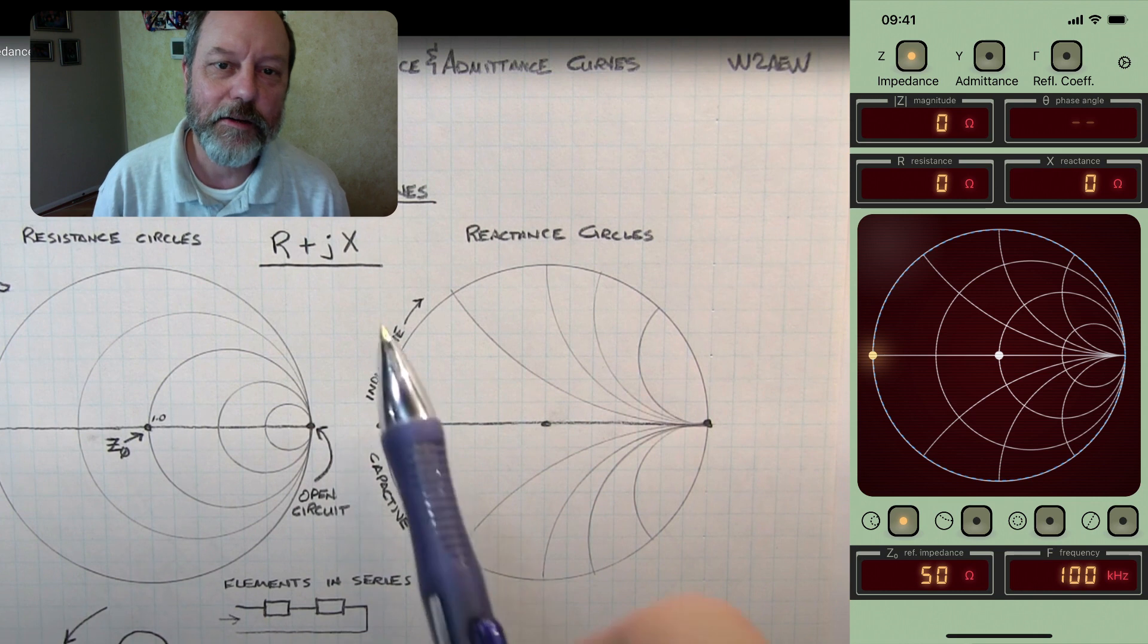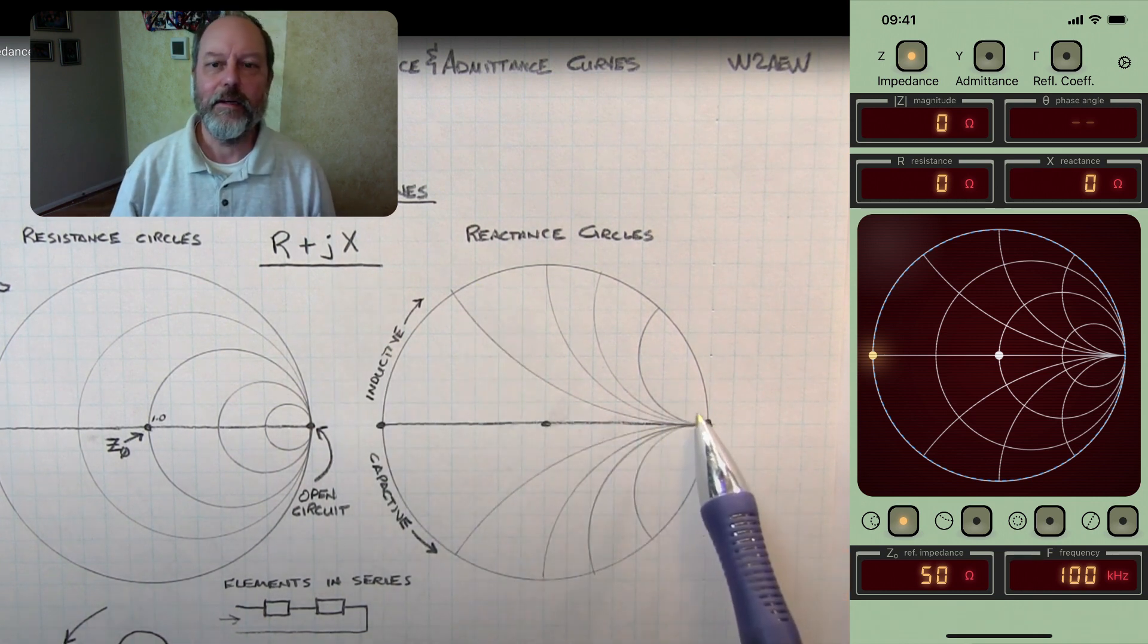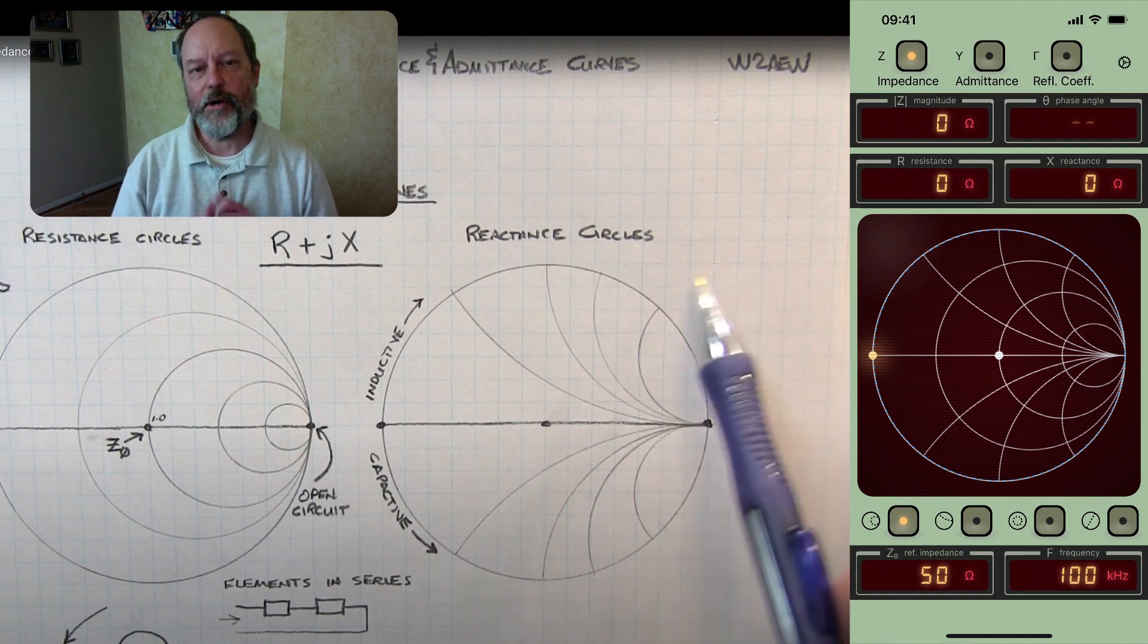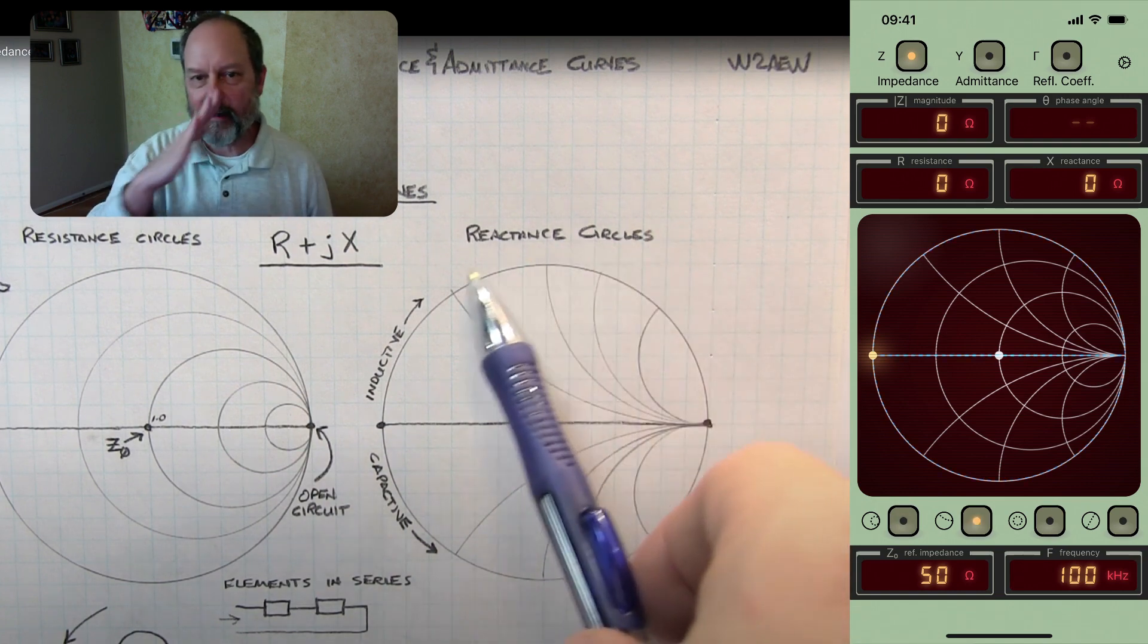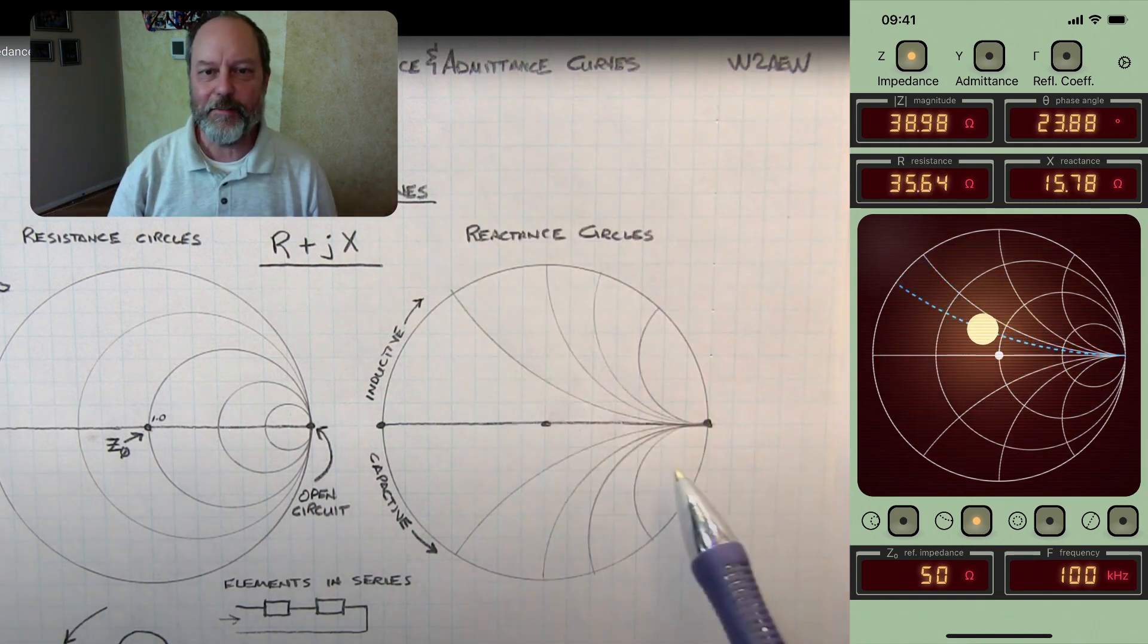So as Alan's showing here, the Smith chart also shows arcs of constant reactants. And we can set the impedance converter app to show the line of constant reactants that intersects the current impedance point. And that's also a live view that you can move around in the Smith chart.